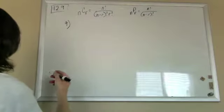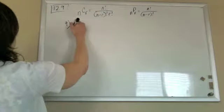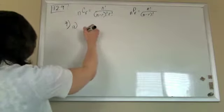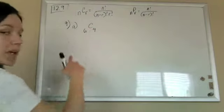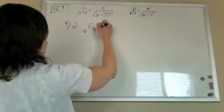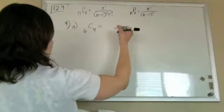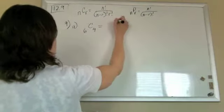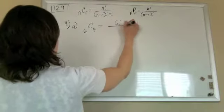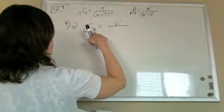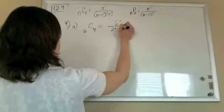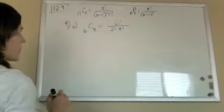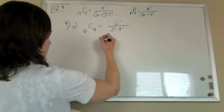So for number 9, for part a, they have 6 things and they want to choose 4, and the combinations would mean the order is not important, and we'll figure out how many ways there are to do that. So it's just 6 factorial over 6 minus 4 is 2 factorial times an extra 4 factorial.